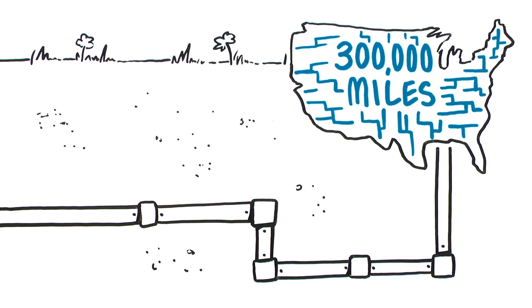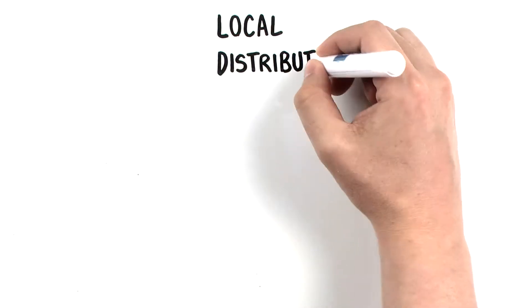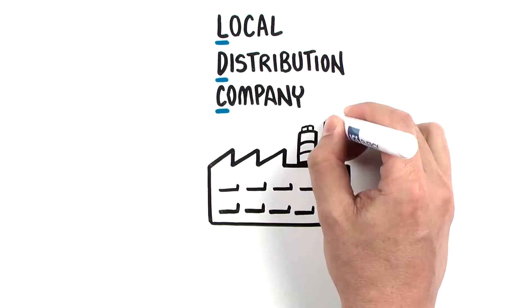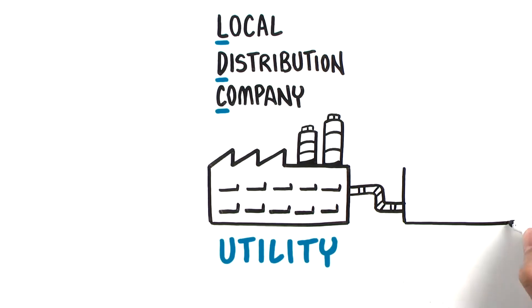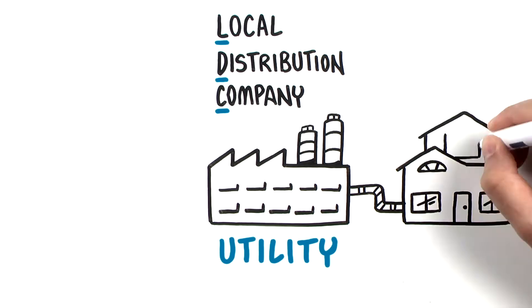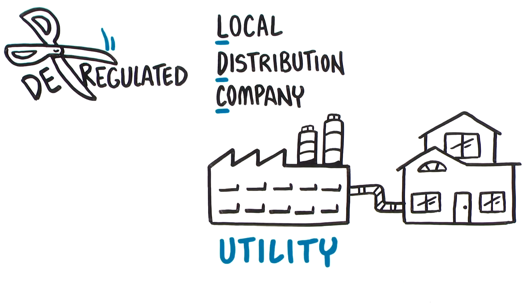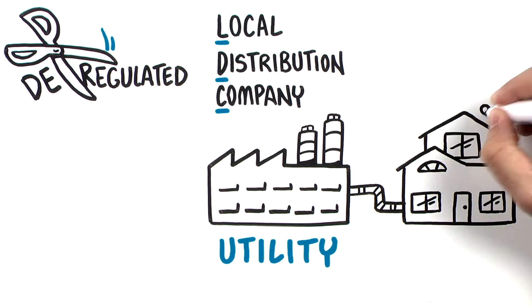The local distribution company, known as an LDC or more commonly your utility, is responsible for delivering the gas to your home or business in both regulated and deregulated states. The difference is in deregulated states you can choose to have the actual natural gas itself be supplied to the utility by another company known as a supplier.